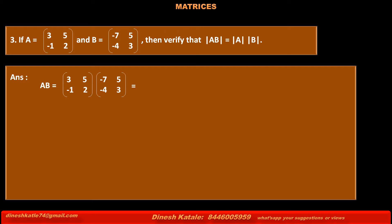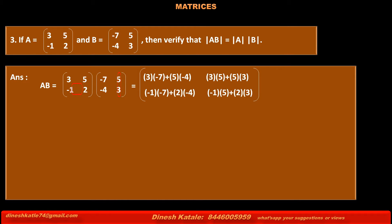This equals: first row of A into first column of B, that is 3×(-7) + 5×(-4); first row of A into second column of B, that is 3×5 + 5×3; second row of A into first column of B, that is (-1)×(-7) + 2×(-4); second row of A into second column of B, that is (-1)×5 + 2×3. Solving each element, we get the matrix [-41, 30; -1, 1].